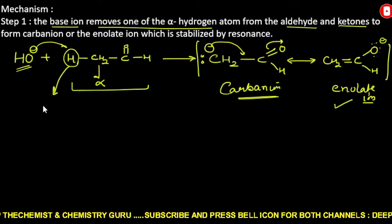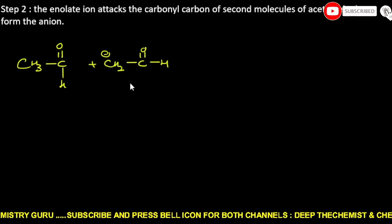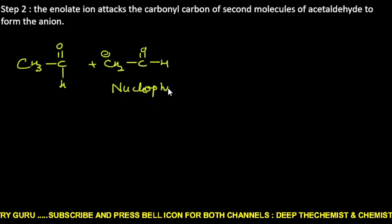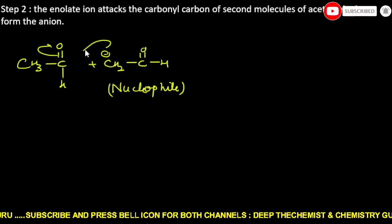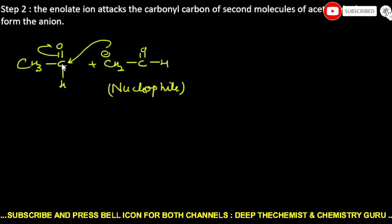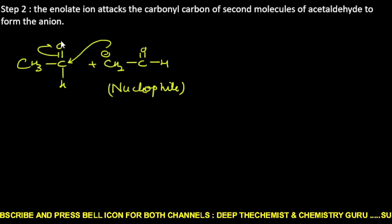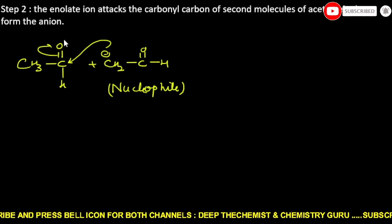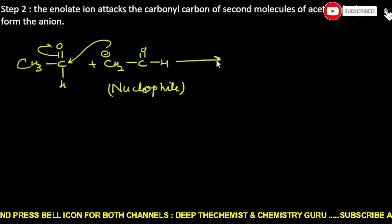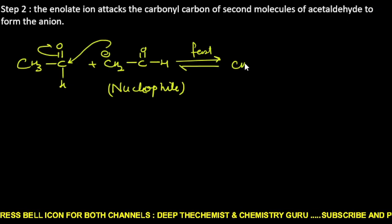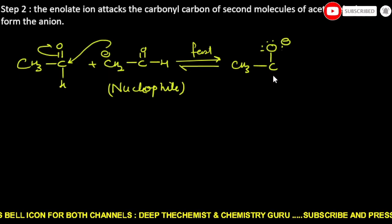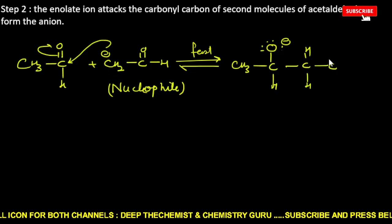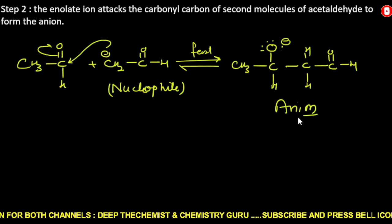In the second step, the carbanion formed reacts with another acetaldehyde molecule. The carbanion — the enolate ion — acts as a nucleophile. Being electron-negative, it pulls electrons toward itself from the carbonyl carbon of the second molecule, due to which a negative charge comes on the oxygen. This is a fast step, and an alkoxide anion is formed.